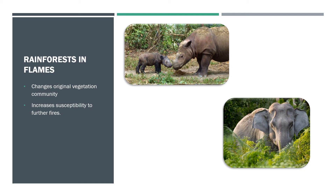The greatest threat they face from wildfire is the shifting of their current plant communities from repeated fires. In some areas, like the Sumatran rainforest, species-rich plant communities have been replaced by pyrophytic grasses. This causes the displacement of large herbivores like the Sumatran rhino and Asian elephant.